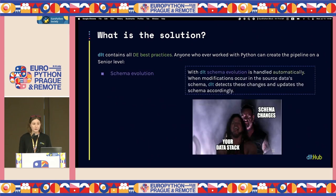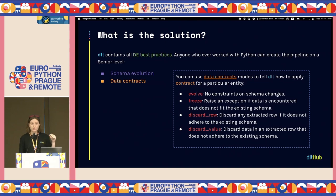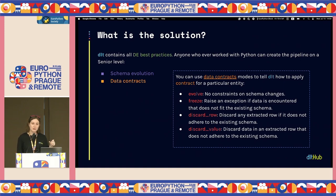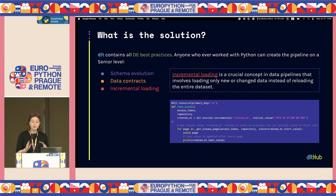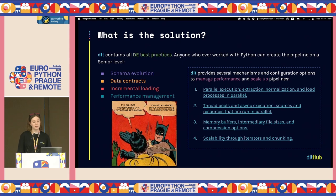What are those best practices? First of all, schema evolution: if your schema is changing, DLT detects this automatically and just updates the schema. Moreover, you can use data contracts — you can tell DLT what to do with new data. If you say 'evolve,' there are no constraints and data changes flow through. If you say 'freeze,' DLT will raise an exception when new data doesn't fit the previous schema. You can say 'discard row' and DLT will drop rows that don't fit, or 'discard value.' Incremental loading is a crucial concept — you don't want to reload the entire dataset, only new or changed data. This is implemented in DLT. DLT also has parallel execution, async execution, and memory control to scale your pipelines.